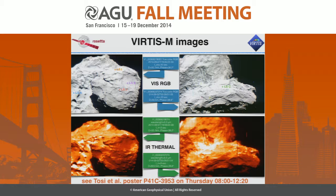These are typical images collected by VIRTIS. Here I also report the five landing sites selected in August by the landing team — the final selected one was landing site J. Of these five landing sites, located on both the head and the body of the comet, I will use these points to describe the spectral variability of the comet. We also have a poster about the thermal properties of the nucleus tomorrow.